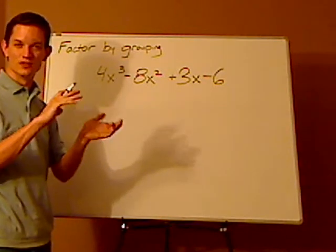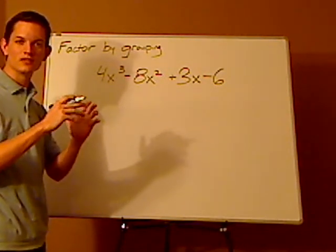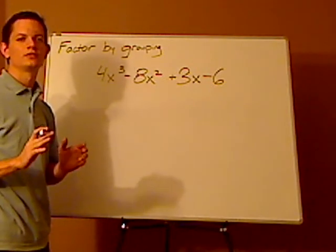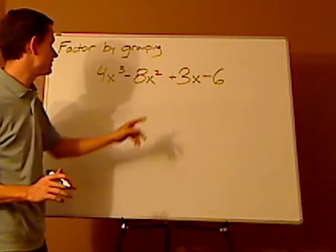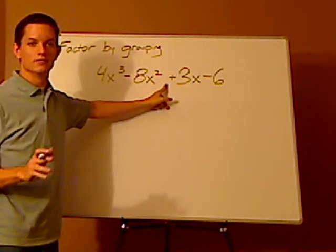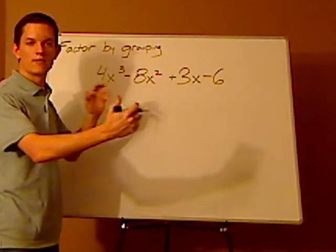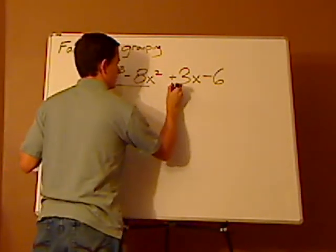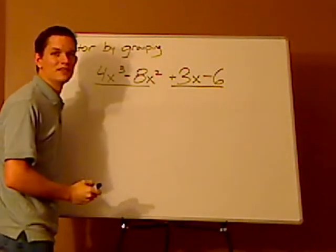Now, there's many ways that teachers do this. Sometimes they put parentheses around it to group. I think that's too confusing, especially if this sign is different, because you're going to have a lot of issues separating that. So to separate the first two and the last two, I just simply underline them.